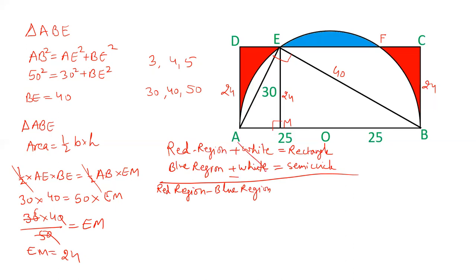So that will be equal to area of rectangle minus area of semicircle. We have to calculate the area of rectangle. Area of rectangle is length into breadth. The length of the rectangle is AB which is 50, the breadth of the rectangle is 24. 50 × 24 is 1200, so rectangle area is 1200. And area of semicircle is ½πr².